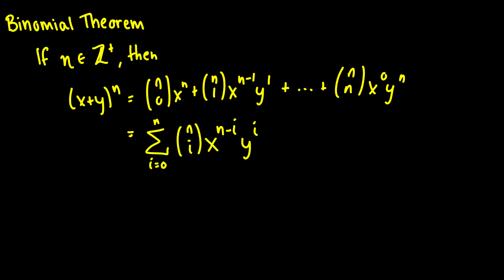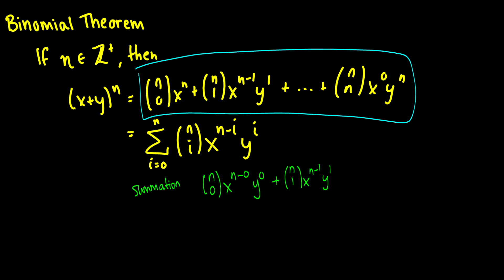We have a convenient summation notation for this. You put i equals 0 into the first case and solve for that. When i equals 0 we get n choose 0 times x^(n-0) times y^0, then we add 1 to i so i is now 1 and we get n choose 1 times x^(n-1) times y^1, and we keep going until i reaches n. This is exactly what was written out expanded. It's a very convenient summation notation.